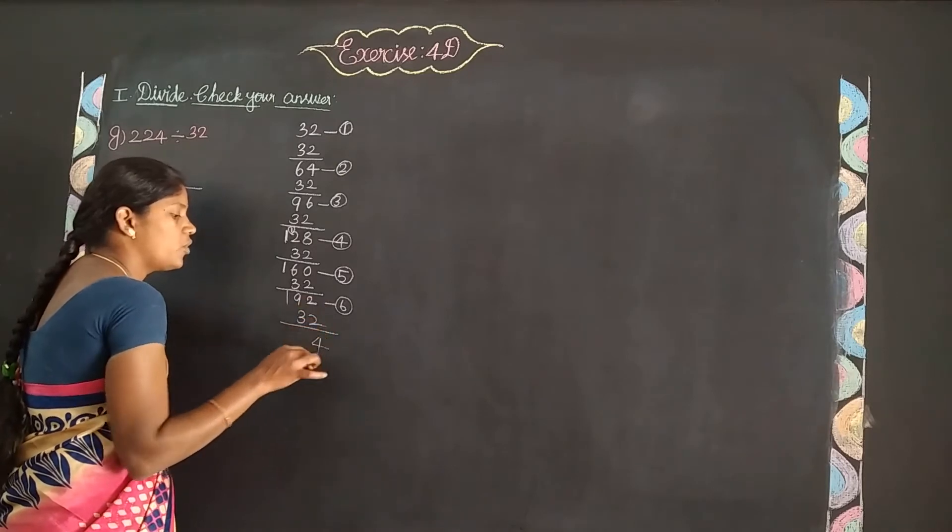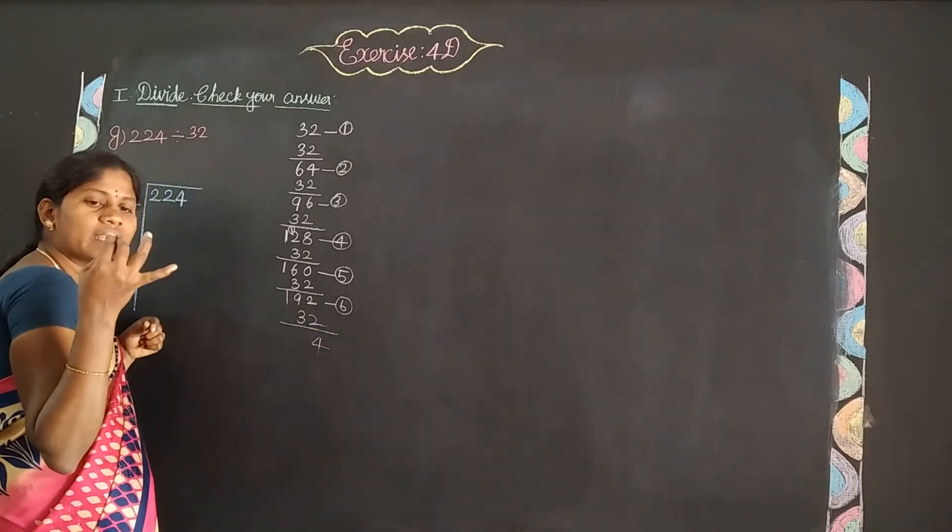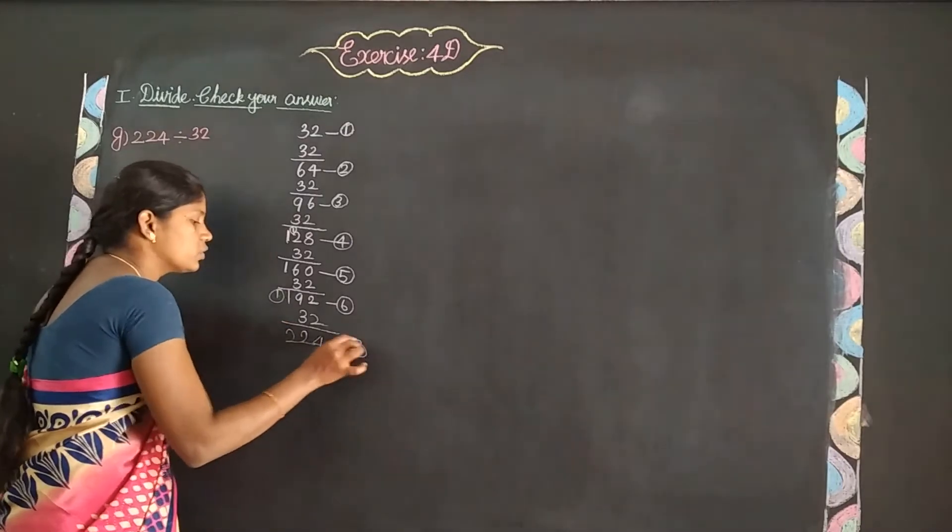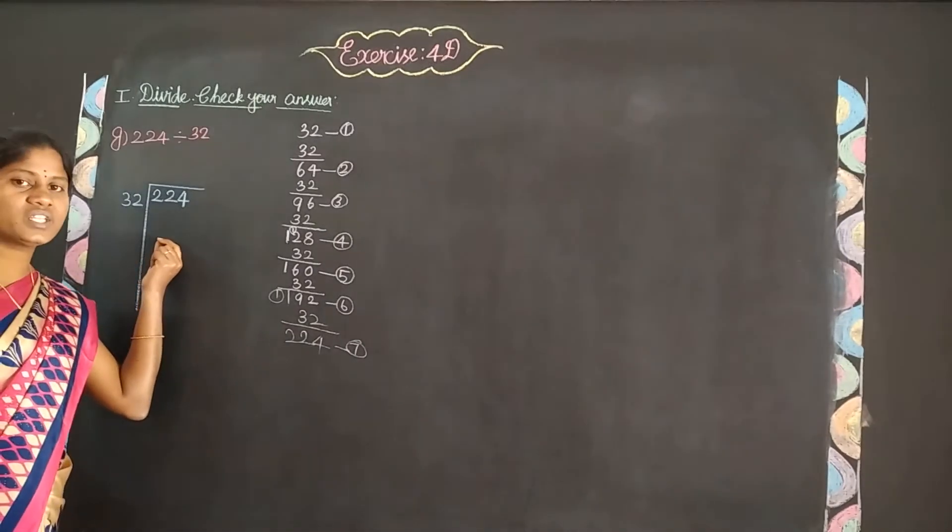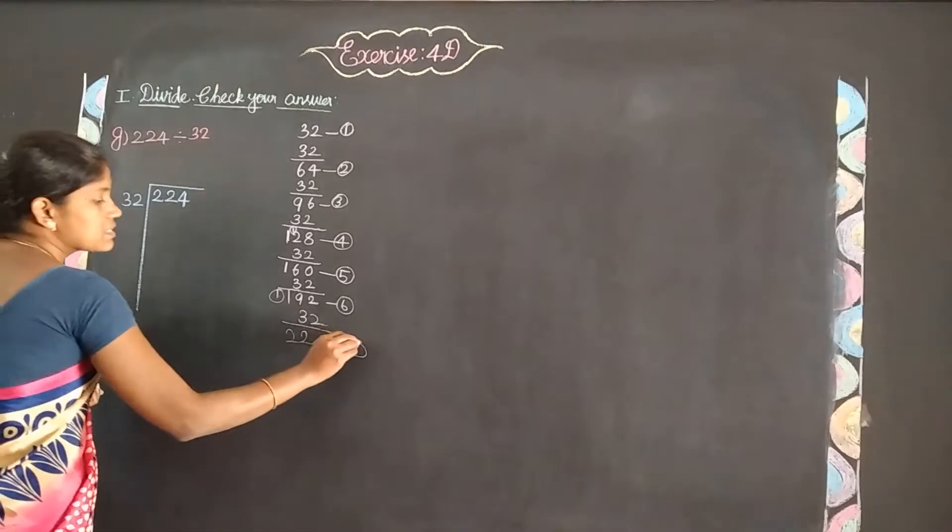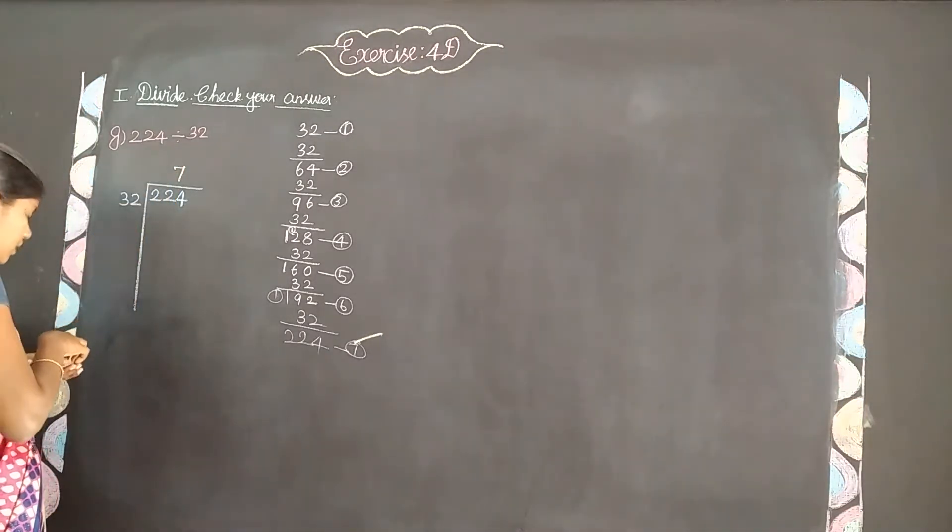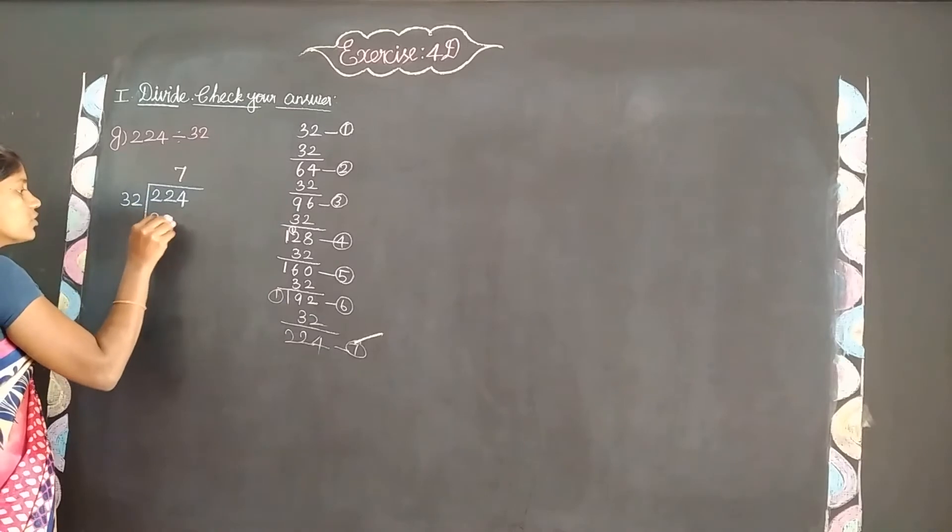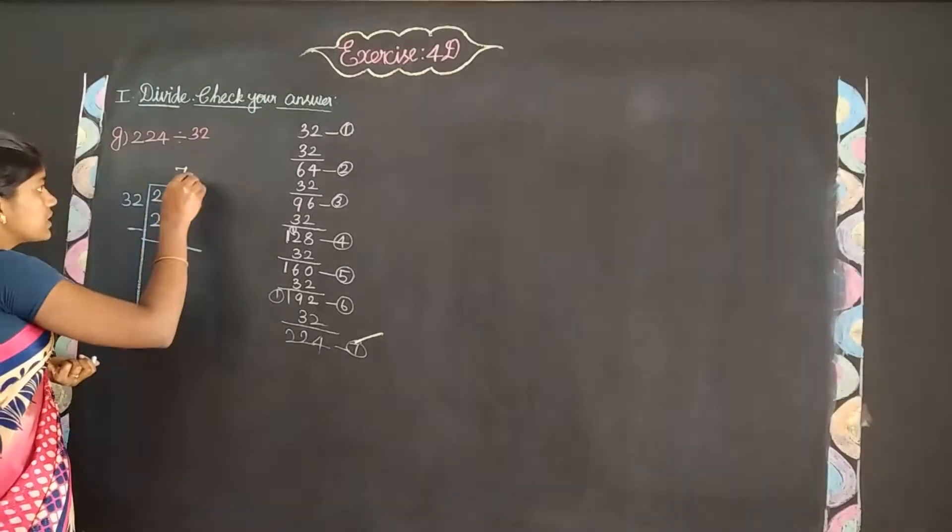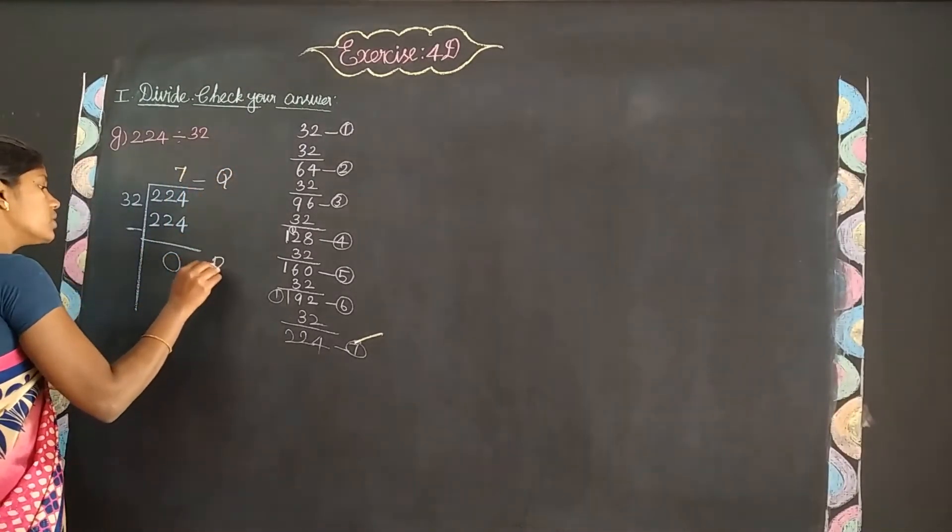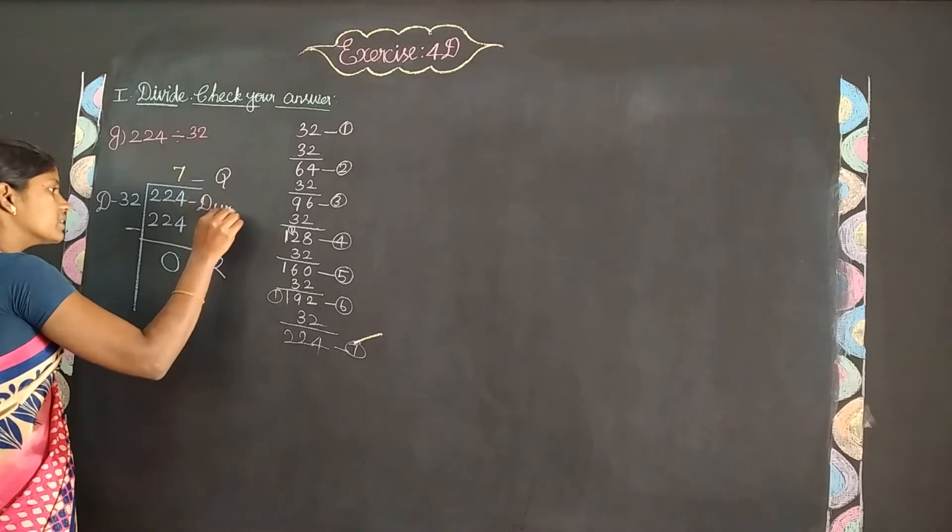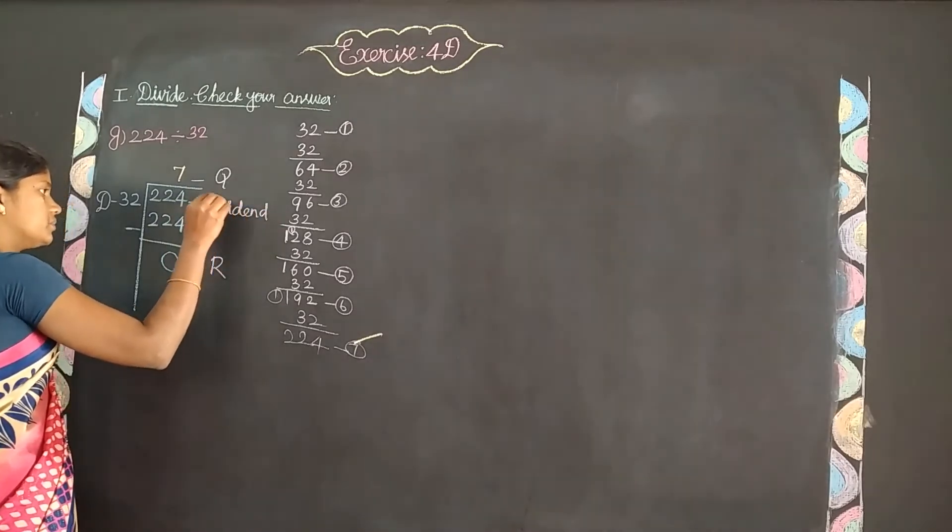7 times 32: 192 plus 32 equals 224. So the remainder is 0. 32 is the divisor, 224 is the dividend, and 7 is the quotient.